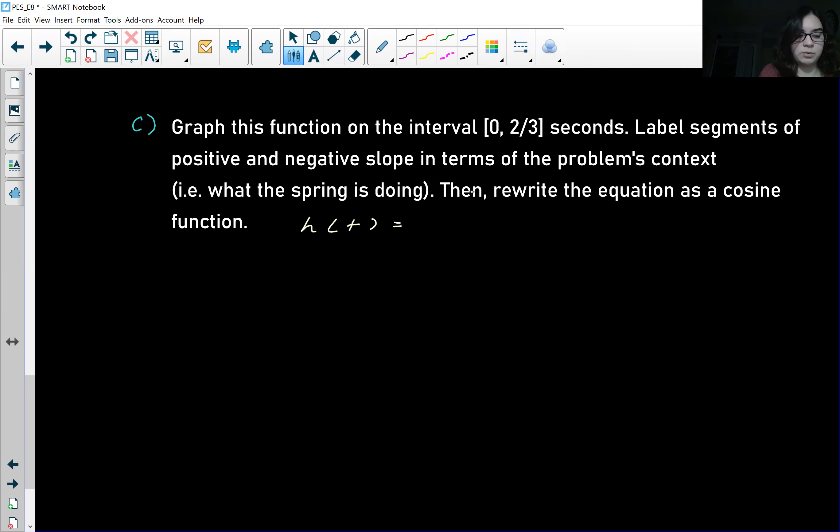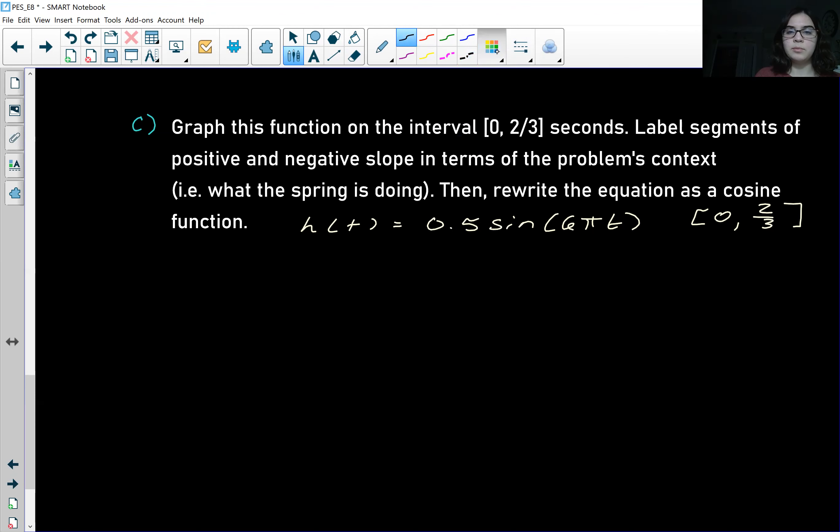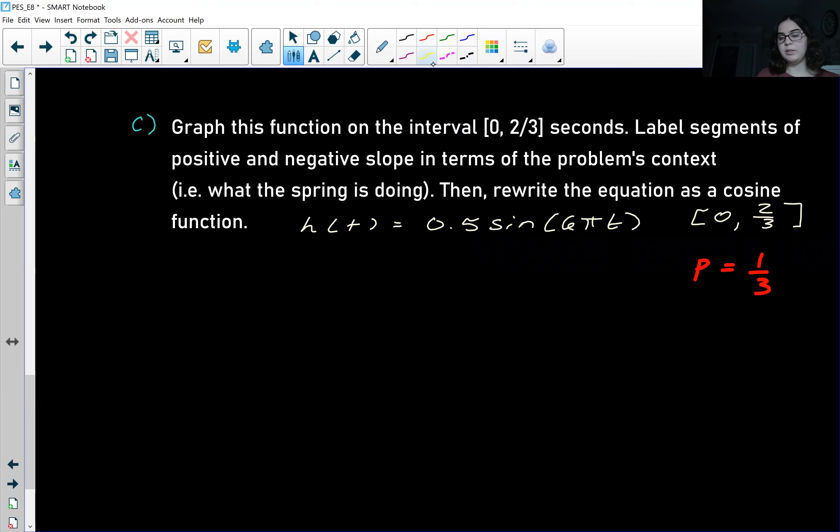h of t is equal to 0.5 times sine of 6 pi times t. And I also like to write my interval right next to that, so between zero and two-thirds. Something similar we're going to do here as we did in the last part, but we have this two-thirds interval and we might want to ask ourselves basically how many cycles are in that time frame. And because the period is equal to one-third, then we know we have two cycles.